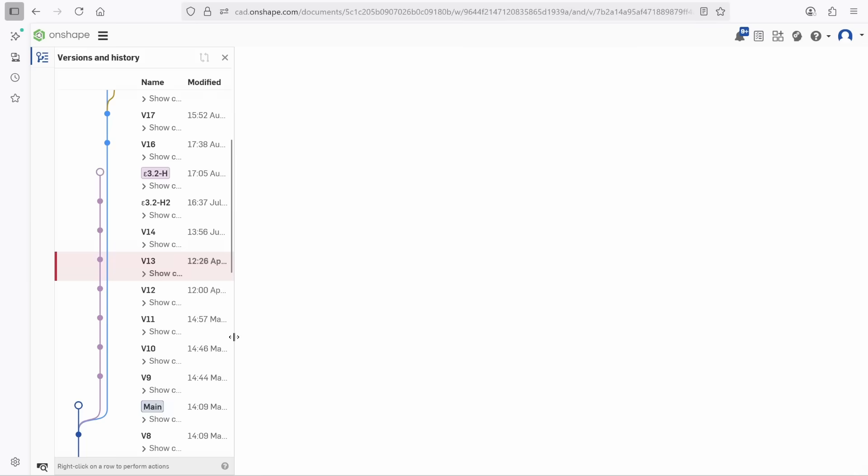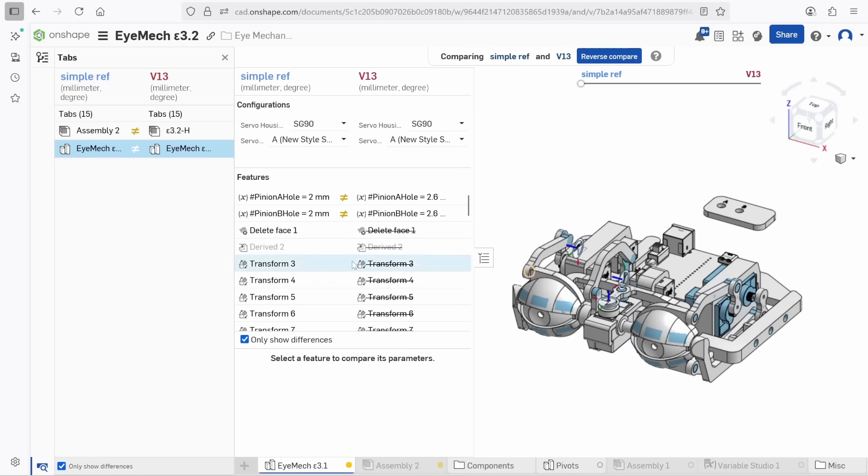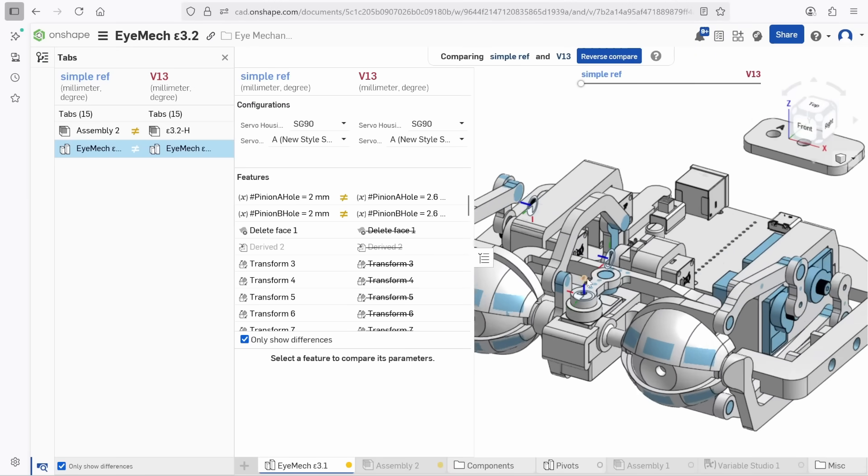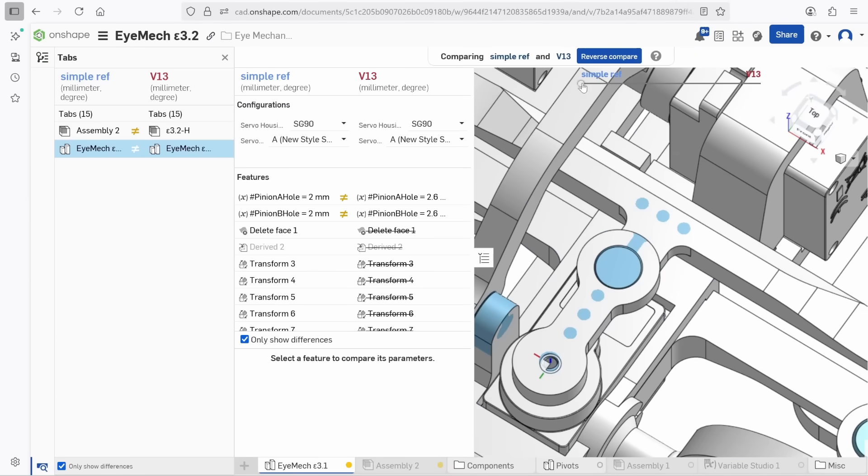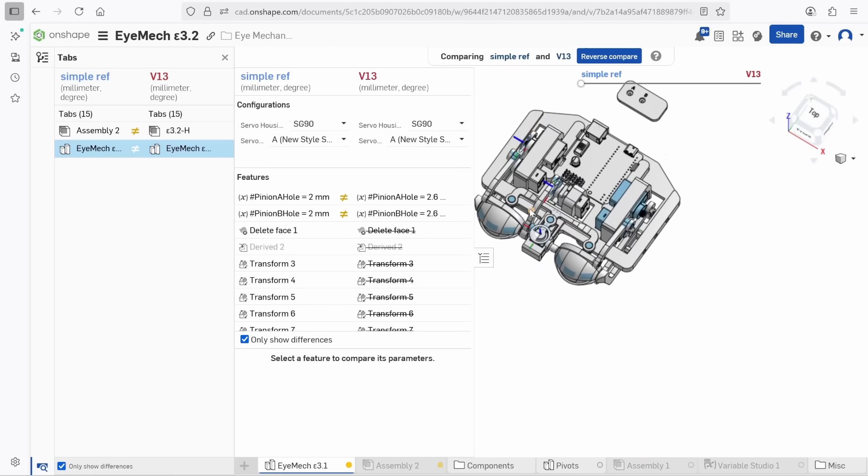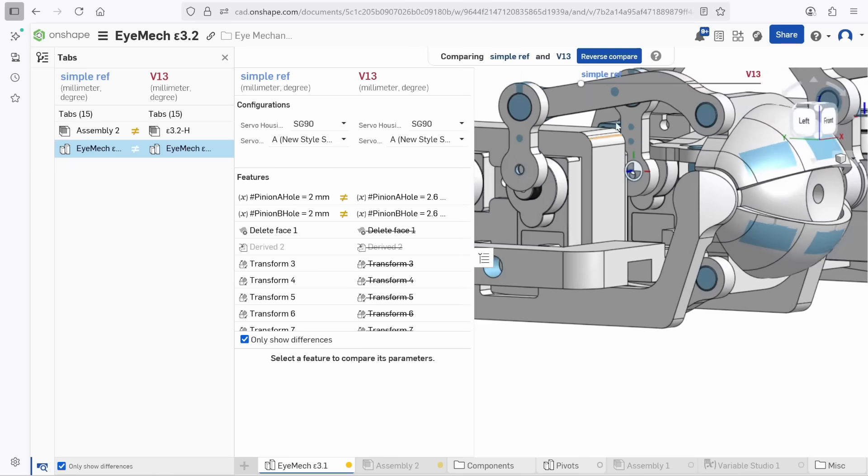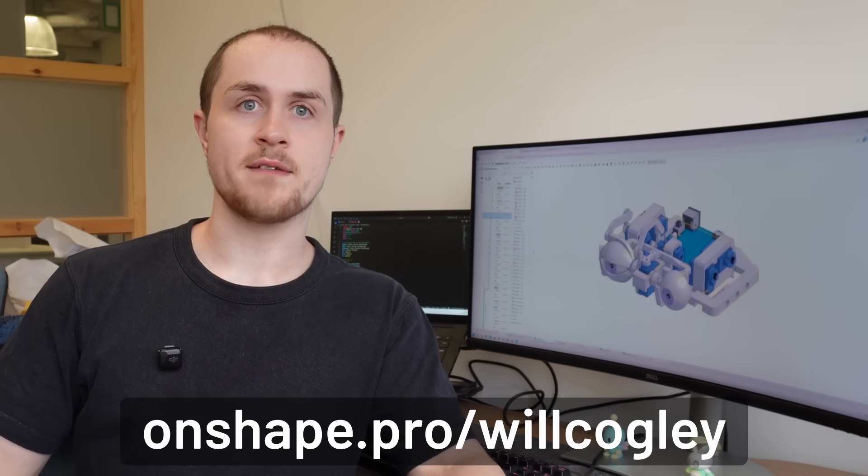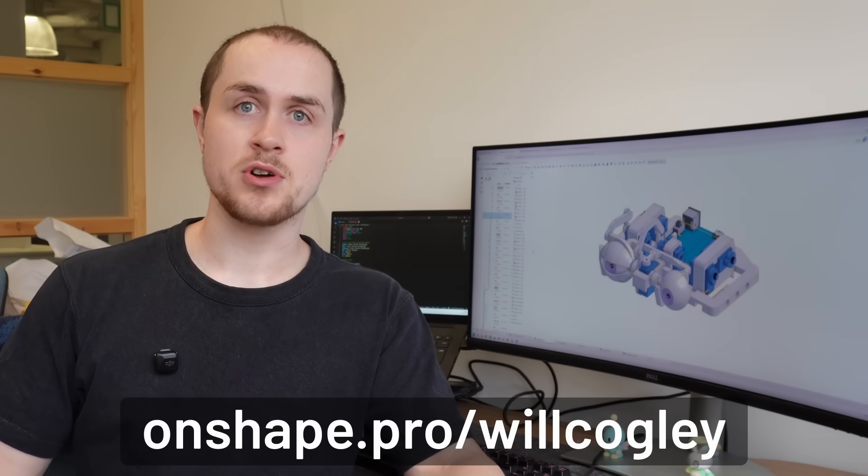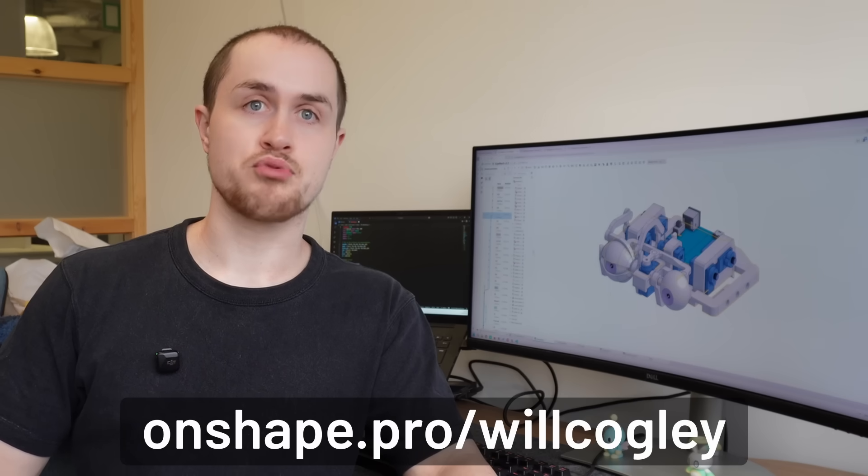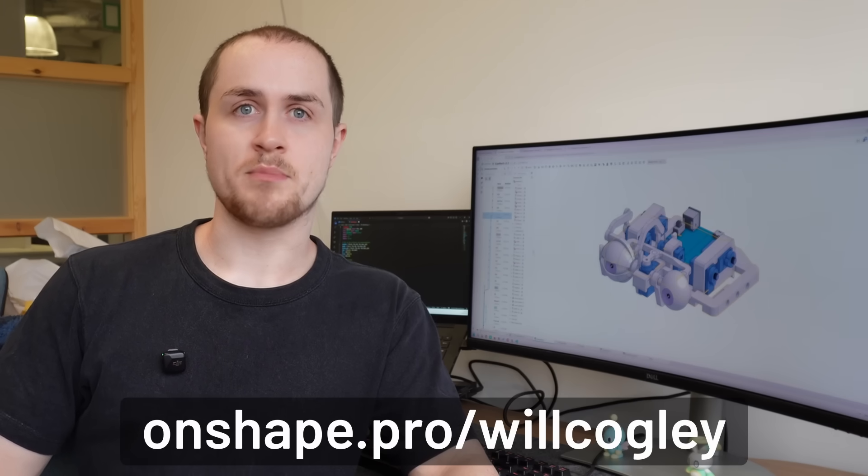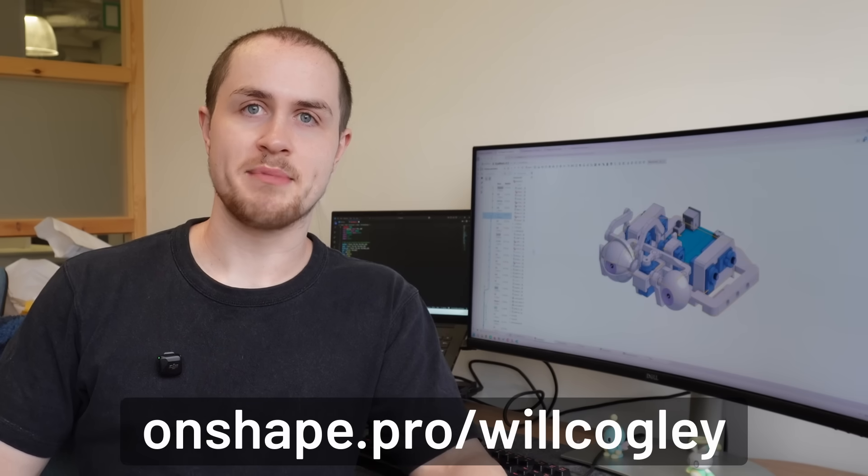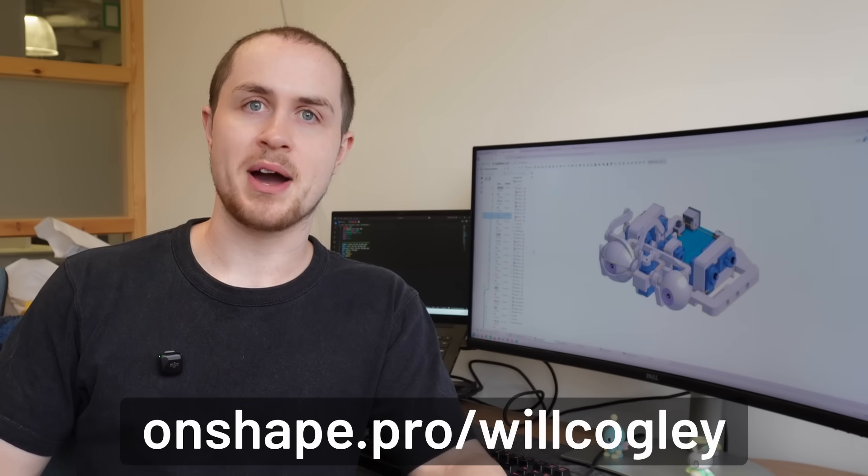Onshape also gives me a robust version history with real-time updates. I can see when changes happen, compare branches or even versions side by side, and roll back when I need to. You get visual merge lines that show how your project has evolved, so tracking the design journey is straightforward and transparent. If you want to give it a go, check out the link Onshape.pro.com/WillCogley to get a free hobbyist license, and if you're a pro, you can get a six-month trial of their pro plan. Onshape has completely transformed how I design and share my work. Huge thanks to them for powering today's video.